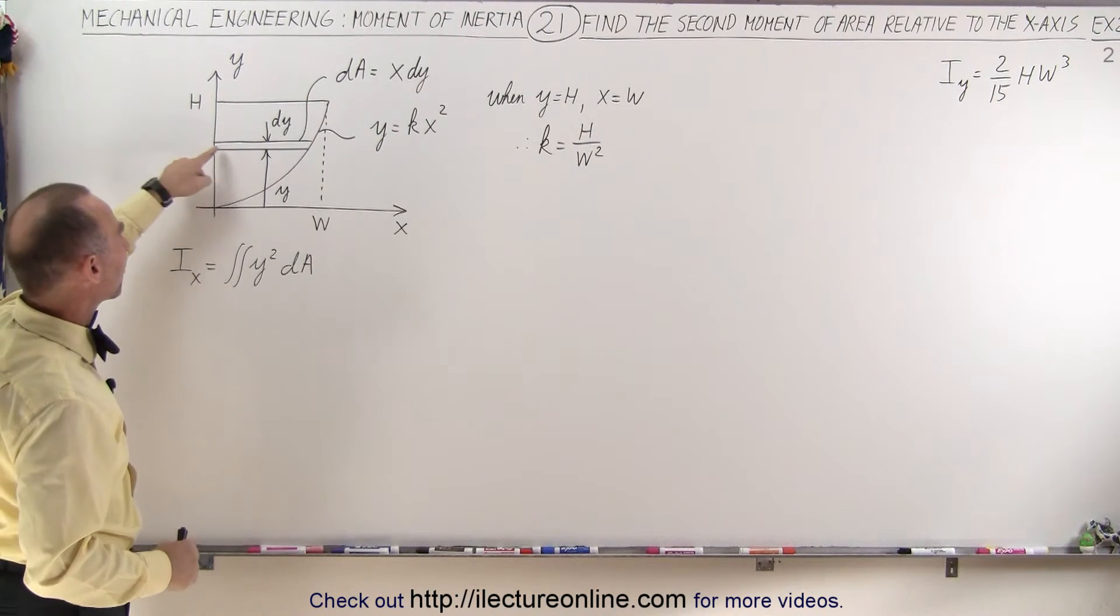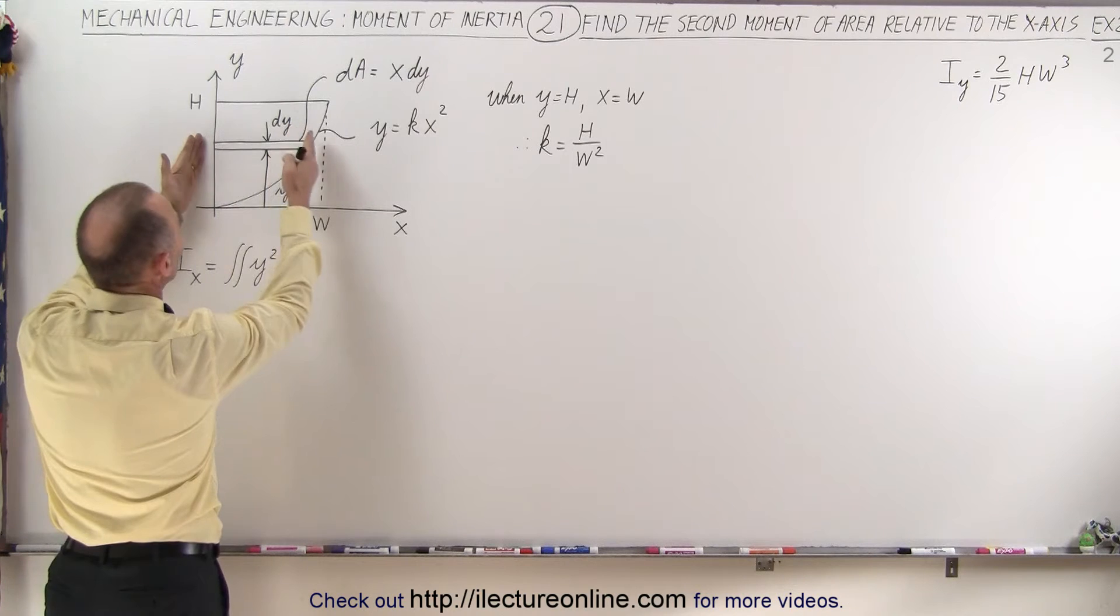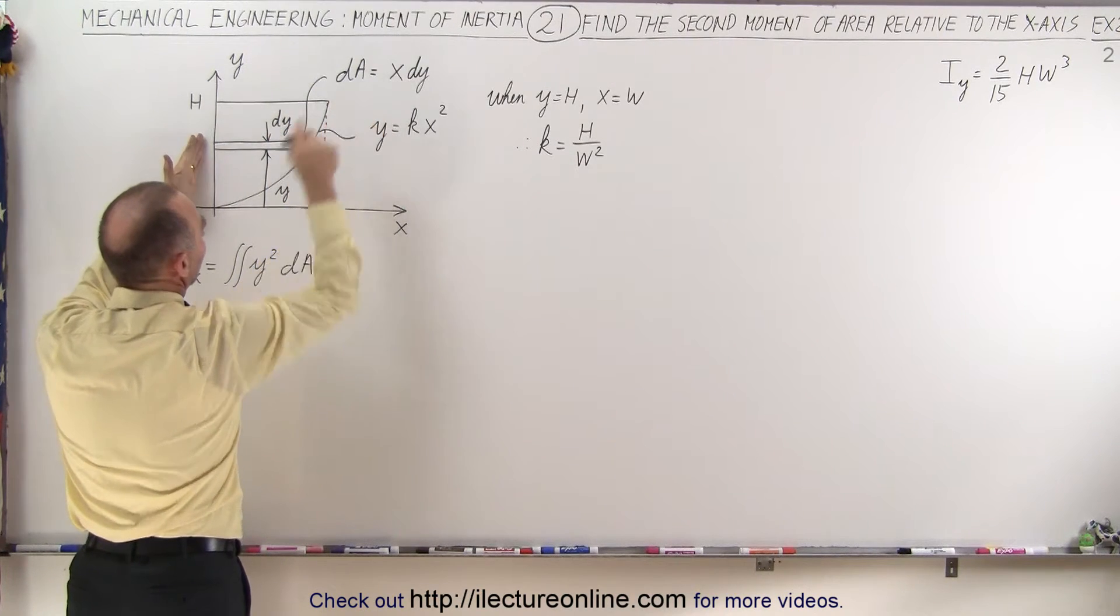So here we now have our area element, which has width from 0 to x and height dy, so our dA is x dy.